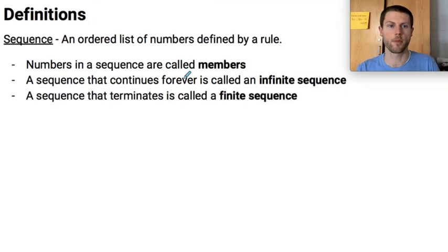Numbers in a sequence are called members, so the actual numbers that are in the sequence are called members. A sequence that continues forever is called an infinite sequence, and likewise a sequence that terminates is called a finite sequence.